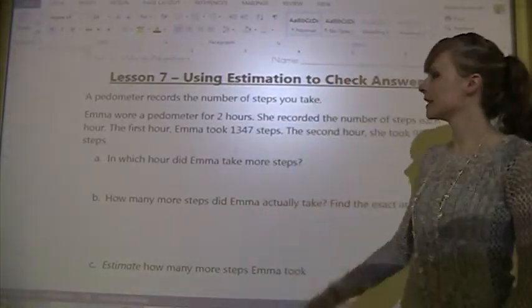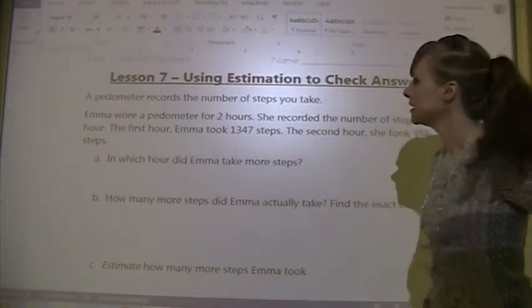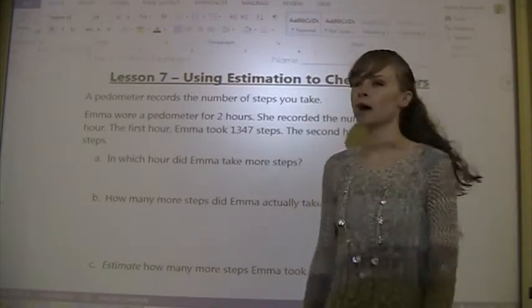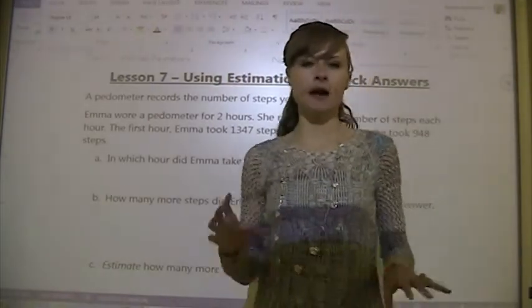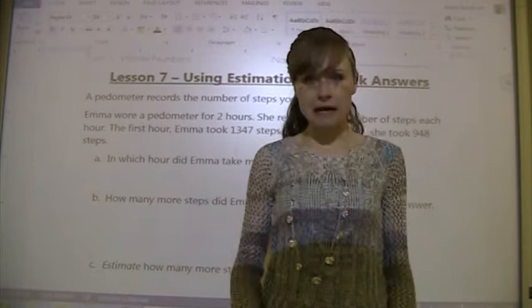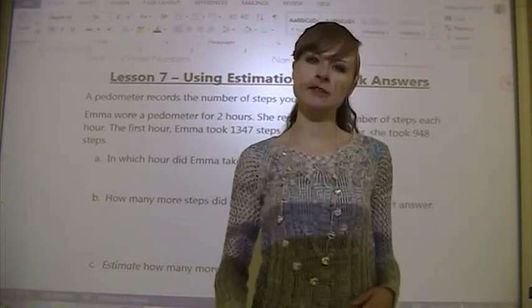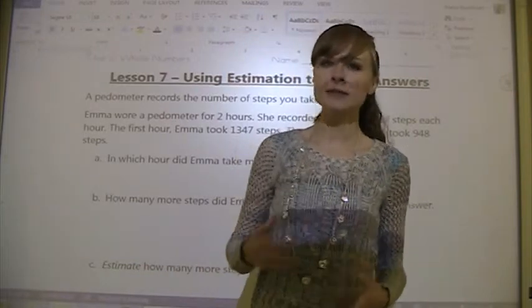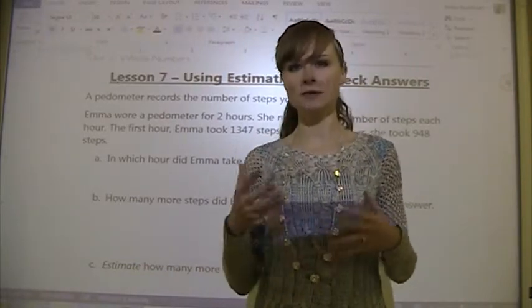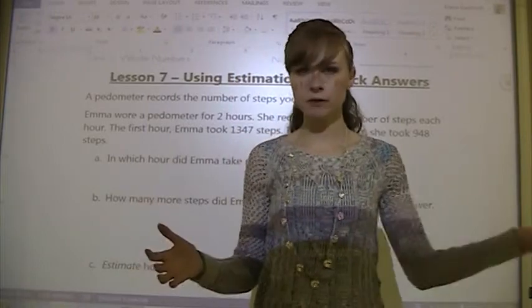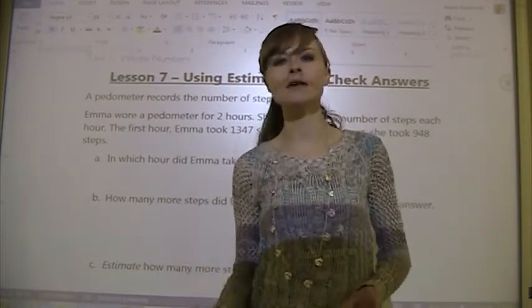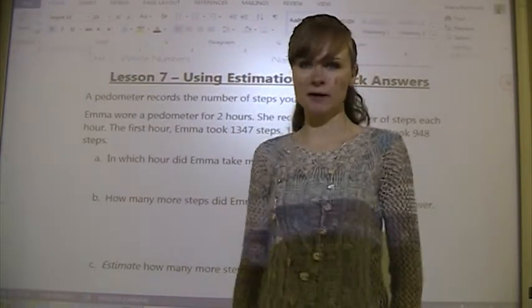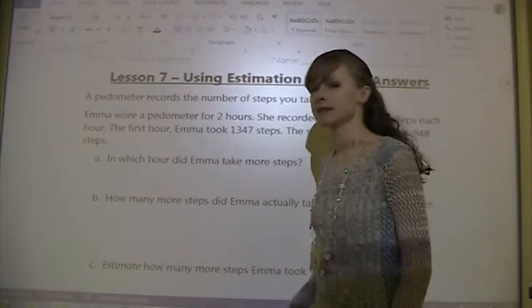This is a lesson on using estimation to check answers. It is lesson 7 of unit 2 on whole numbers. We're going to be focusing on adding or subtracting to find actual answers and then using estimation to figure out if our answer is reasonable. If your estimation is completely different from your answer, then one of those things is wrong and you need to figure out what you did and fix it.